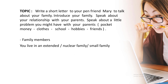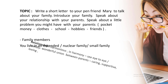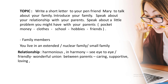In this letter, we have to mention the family members — whether we belong to an extended family, a nuclear family, or a small family. We begin with 'My family is composed of...' Then you start with the first part, which is the relationship between family members. Use words like 'harmonious,' 'in harmony,' 'we see eye to eye.' For example: 'My parents see eye to eye, thanks to the wonderful union between them.'